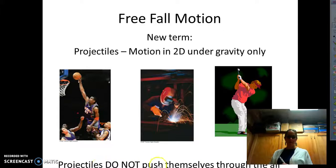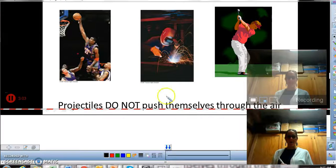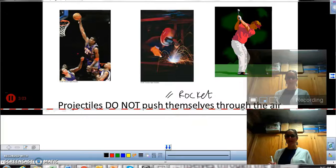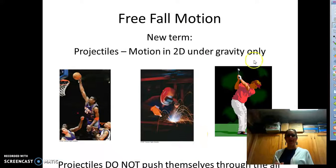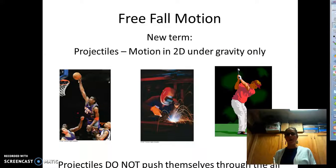The big thing is they don't push themselves through the air. So a counter example is like a rocket. Rockets push themselves through the air. Anyway, so this is all under the influence of gravity only. That's the other key thing. The good news is 90% of your problems is just under gravity. So no air resistance, nothing along those ideas. And the AP will be pretty cognizant of that as well.